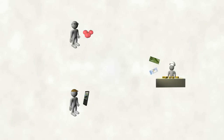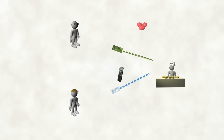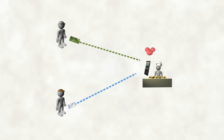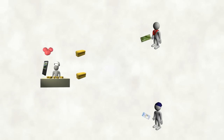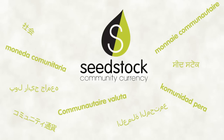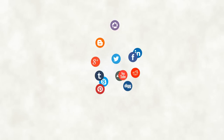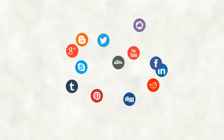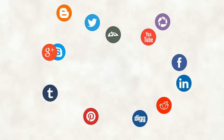Seedstock exists alongside the Canadian dollar, so if you use it, you get to participate in more than one economy. If you like to buy things, you have more ways to buy. And if you also run a business, your business has more ways to sell. It's a bit like speaking more than one language, or participating in more than one social network.